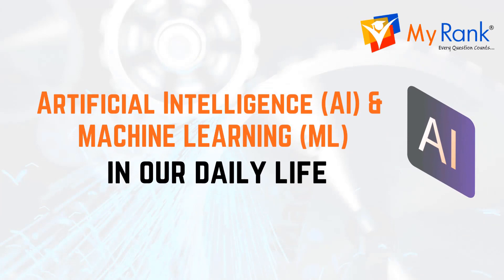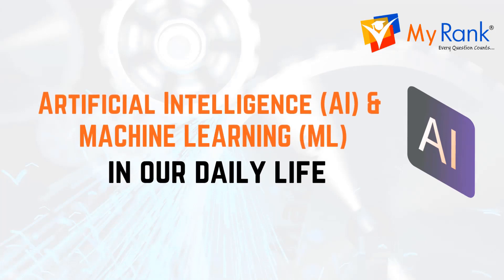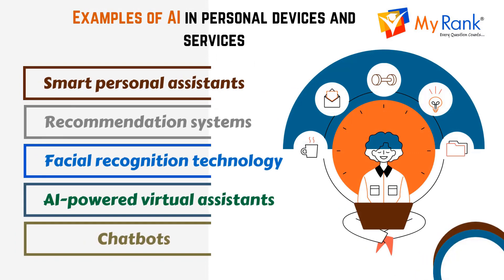AI and ML have a significant impact on our daily lives, and we may not even be aware of it. Let's see some of the ways AI and ML are used in our daily life. Examples of AI in personal devices and services include smart personal assistants, recommendation systems, facial recognition technology, AI-powered virtual assistants, and chatbots.